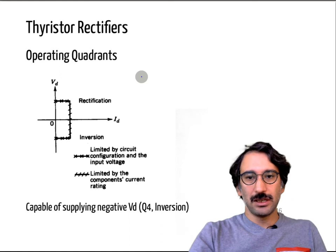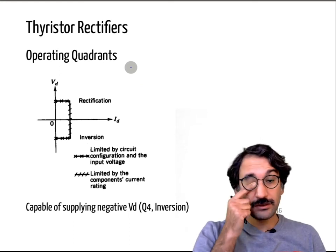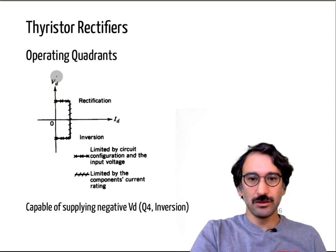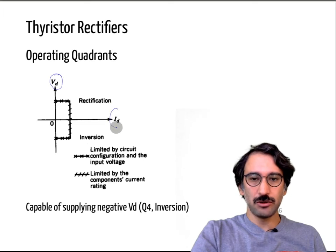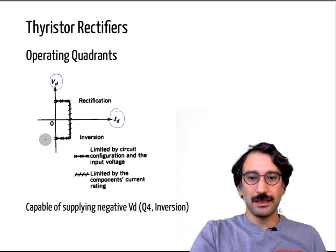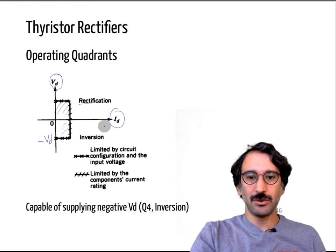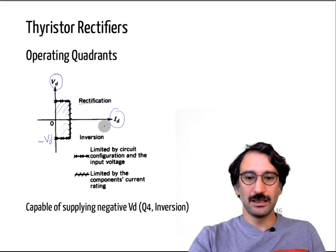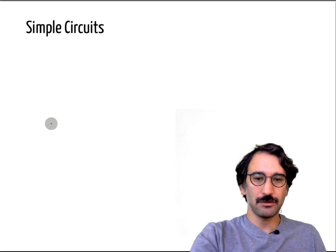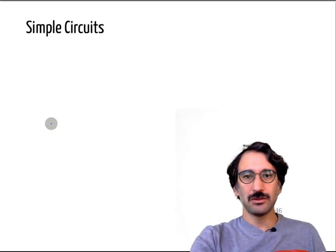Different from diode rectifiers, thyristor rectifiers can operate in two quadrants. They can supply positive voltage and positive current like a diode rectifier, but also supply negative voltage with positive current. So it operates either in rectification mode or in inversion mode, which we will discuss in the following slides. Vd can range from positive to negative.